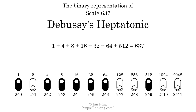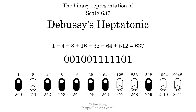That is why the scale number, in decimal, is 637. The scale number not only enumerates the scale with a unique index, but it also literally describes the tonal content of the scale. Represented as a binary number in base 2, the scale number is 0001001111101.